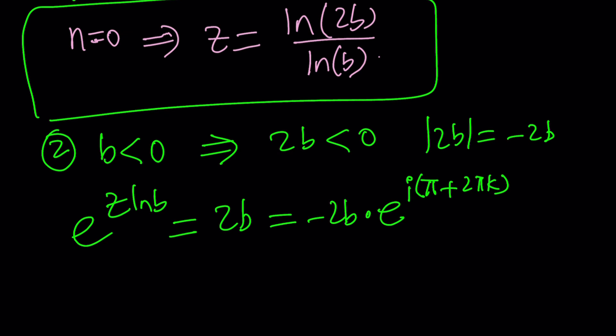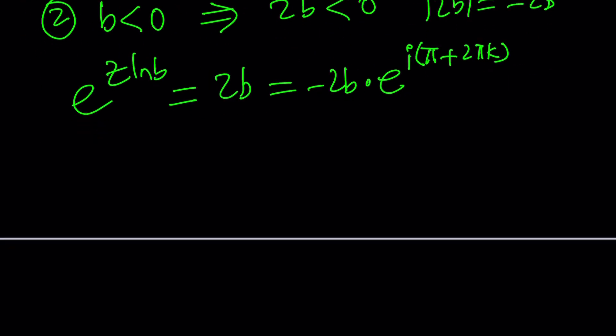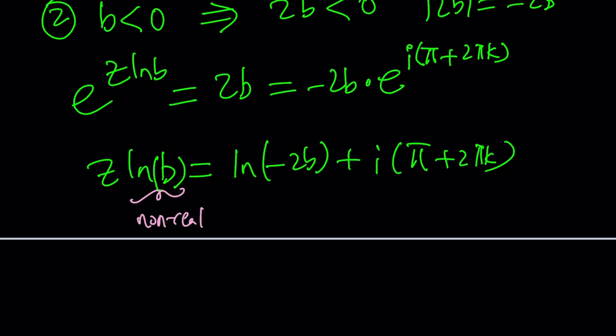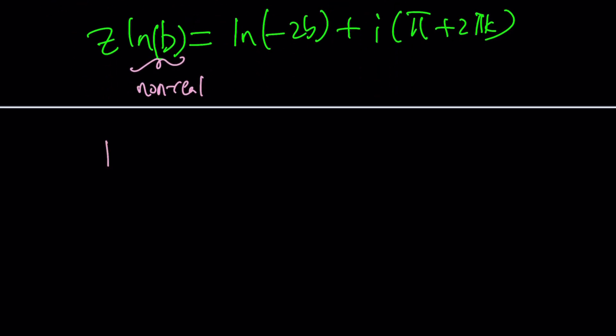And now let's use the natural log. We're going to have Z ln B equals ln of negative 2B plus i times (π + 2πK). And then we can go ahead and divide by ln B, right? The problem is ln B is not well-defined. This is non-real because B is negative.